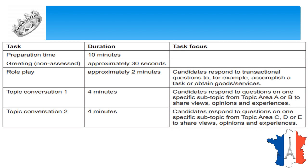You are given a topic and you have 4 minutes to discuss on the topic. Generally, topic area A or B is given in the first topic conversation. We would further go ahead and see what A or B means. The second topic is for C, D and E — that is, to share views, opinions and experiences.